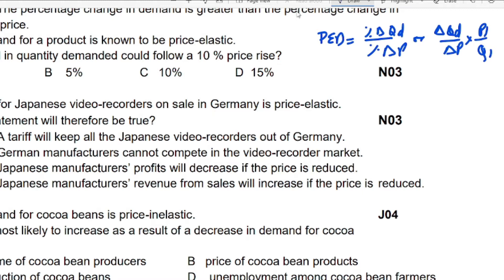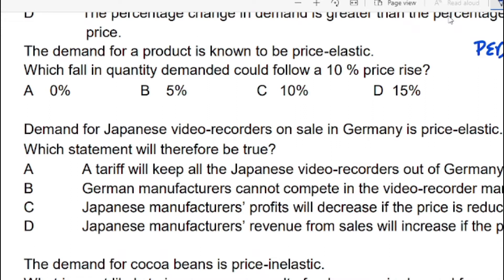Now discussing question number three. The question says the diagram shows a price elastic demand. Demand is elastic when the PED answer is greater than one — keep that in mind. It would be inelastic if it is less than one. Since the examiner states that demand is price elastic, the answer must be greater than one.